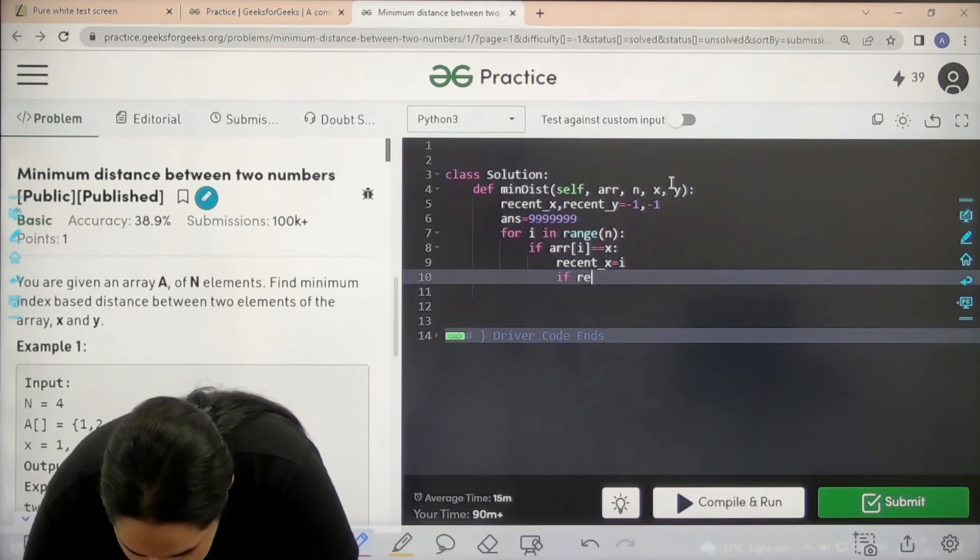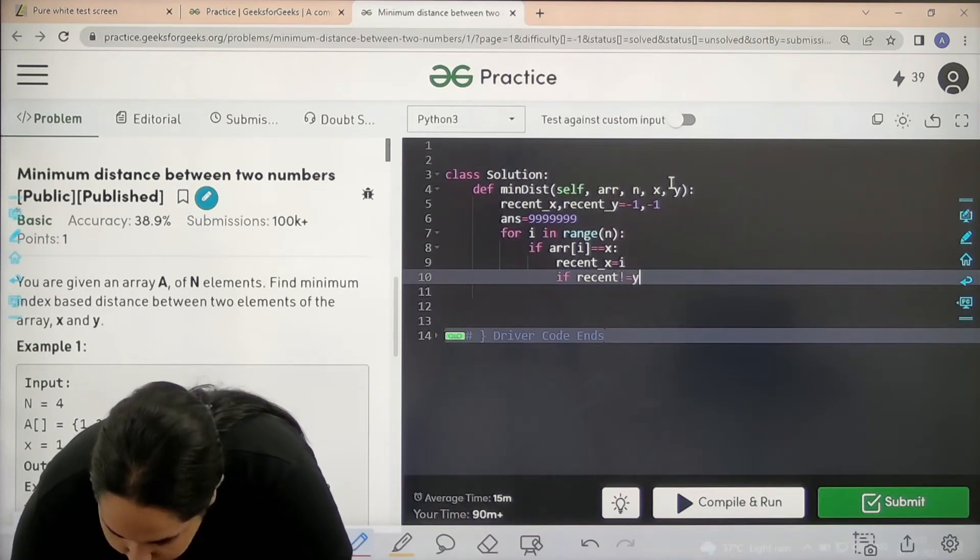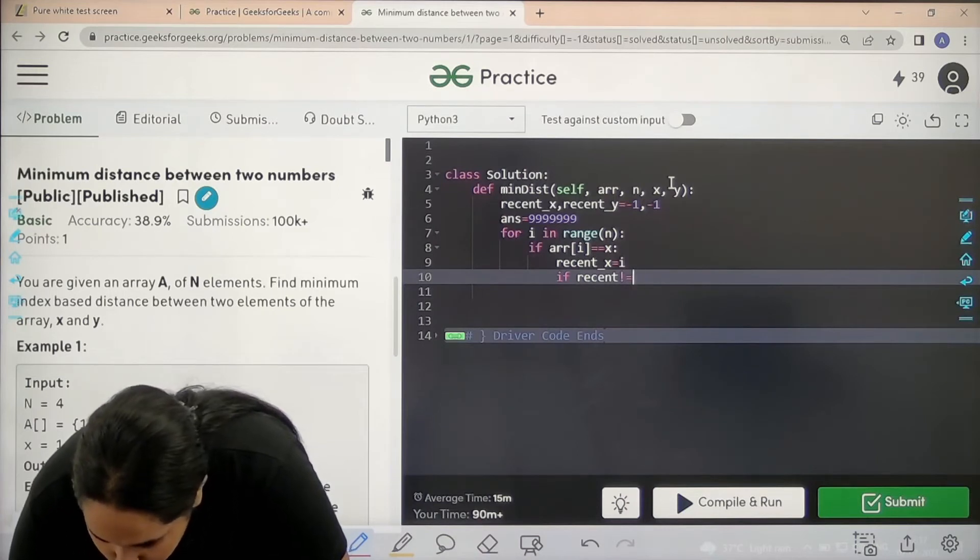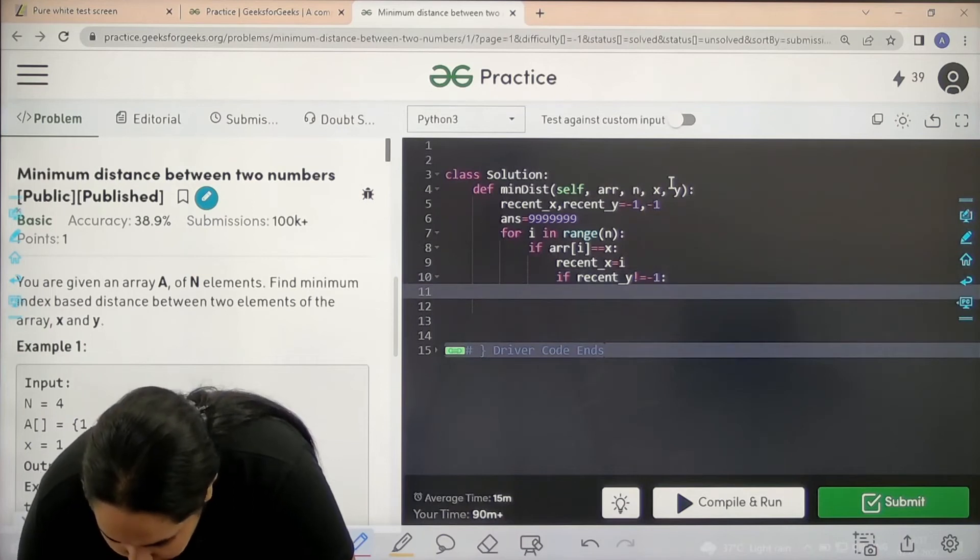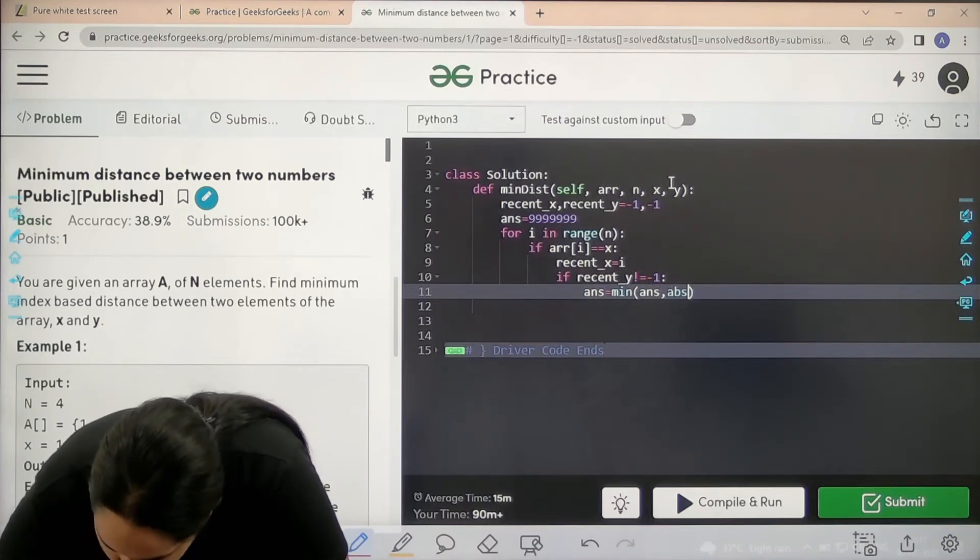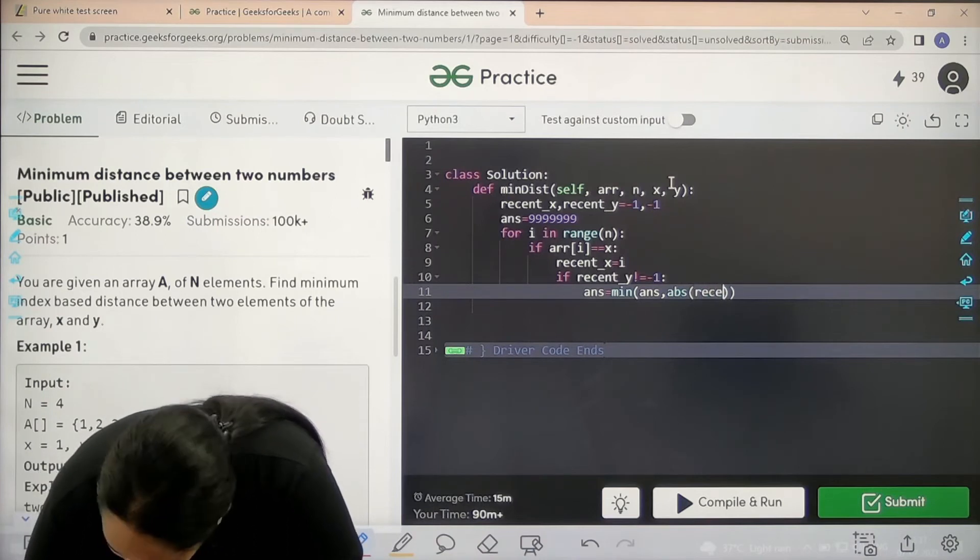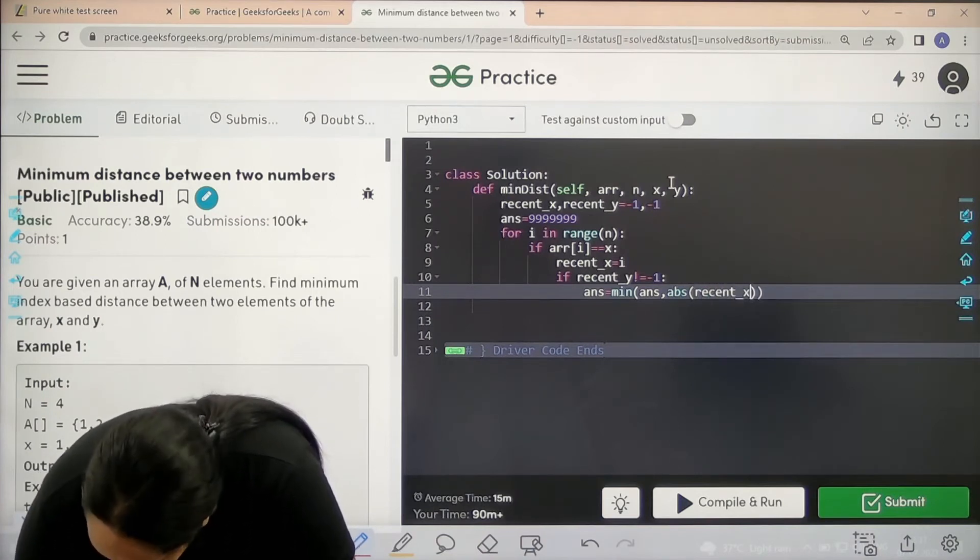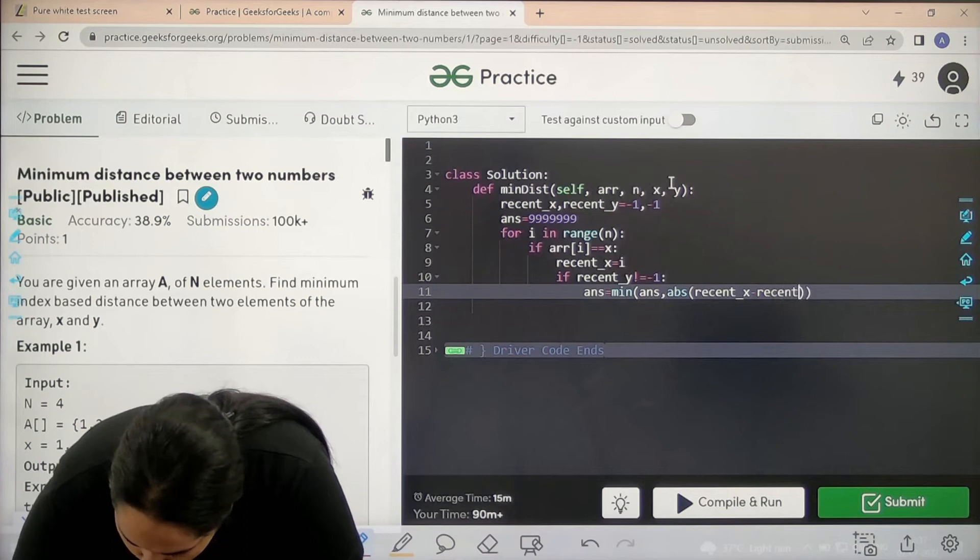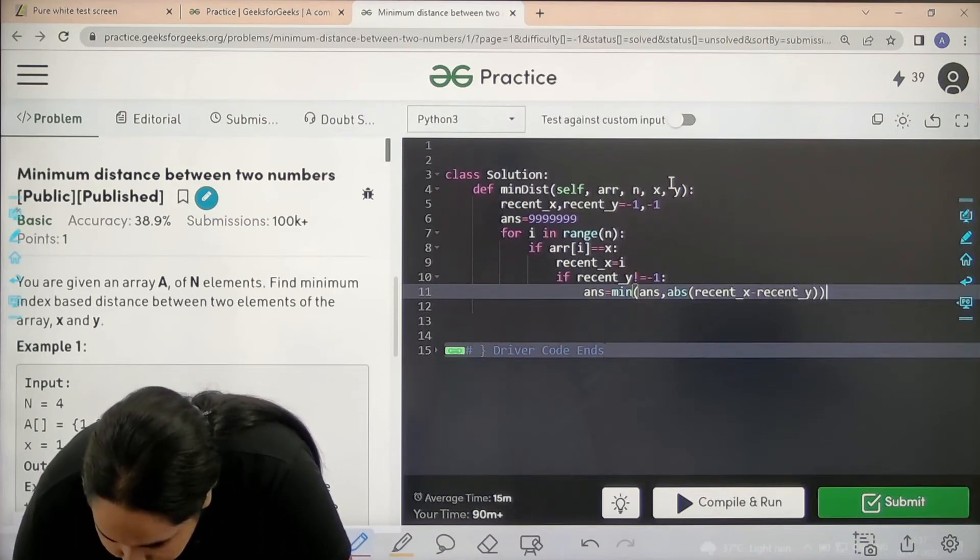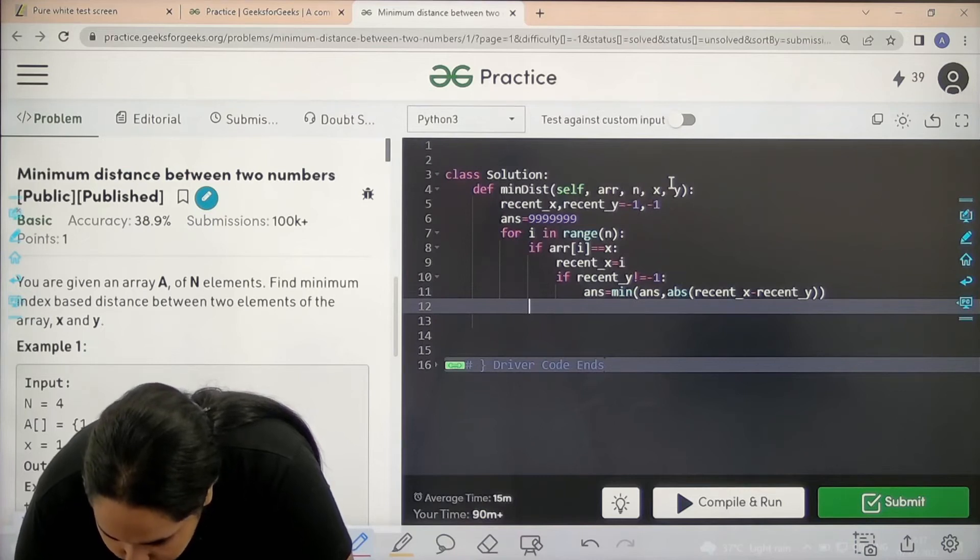Now, if recent_y is not equal to -1, answer equals minimum of answer and absolute value of recent_x minus recent_y. This is the if condition.